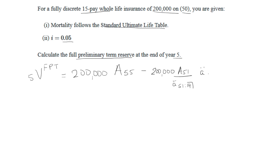We're going to multiply this by annuity due age 55, and at age 55 there's 10 more payments. Now we're going to use the Standard Ultimate Life Table to figure out what each one of these are. So capital A_55 is 0.2354, capital A_51 is 0.1978, and then we have to divide it by the annuity due.